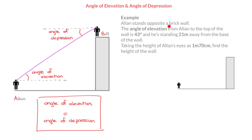We're told that Alan stands opposite a brick wall. We're then told that the angle of elevation from Alan to the top of the wall is 43 degrees, and he's standing 21 meters away from the base of the wall. Finally, we're told — taking the height of Alan's eyes as 1 meter 70 centimeters — find the height of the wall. When given a question like this, what I like to do is add all the information to the diagram.